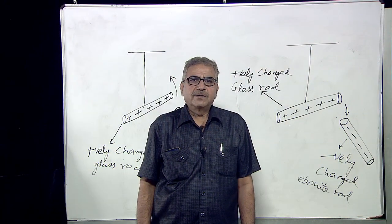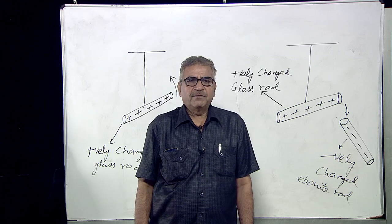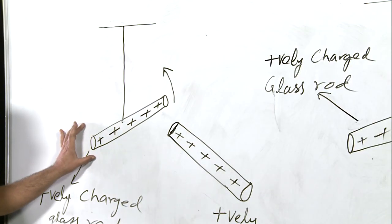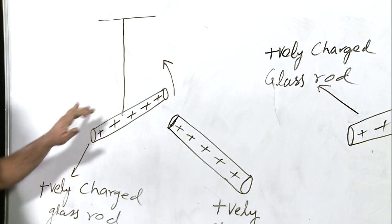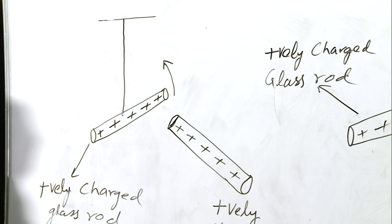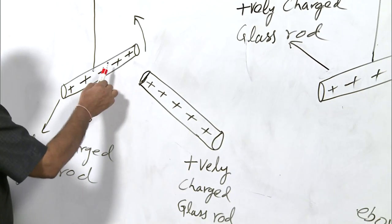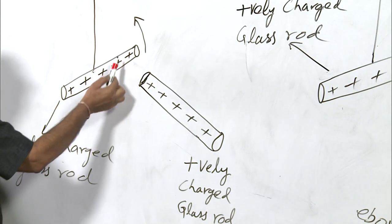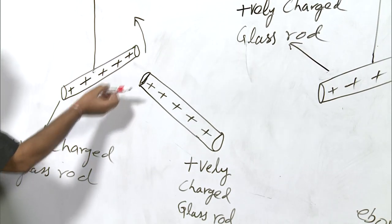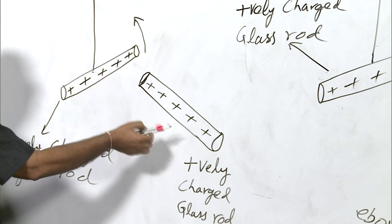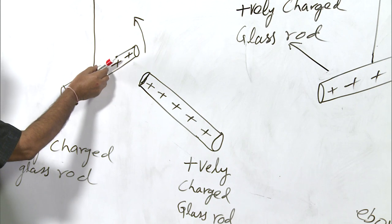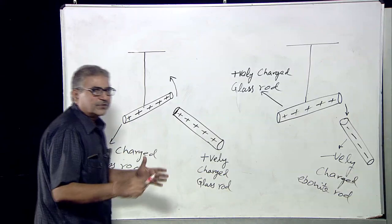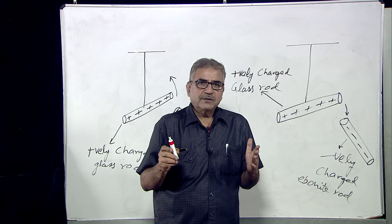We will now explain attraction and repulsion between like and unlike charges. This is a positively charged glass rod that has been rubbed with silk and is suspended by a support. When we bring another positively charged glass rod near to it, the suspended rod moves away because both rods have the same charge. This proves that like charges repel each other.